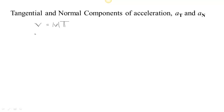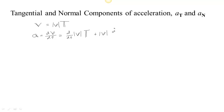We want to look at the acceleration. The acceleration is the derivative of velocity with respect to time. And by the product rule, that would be the derivative with respect to time of the speed times the tangent, plus the speed times the derivative of the tangent with respect to time.